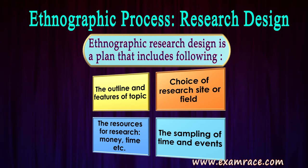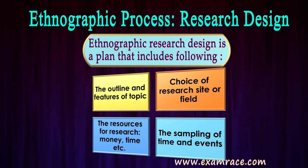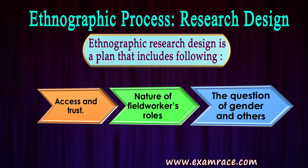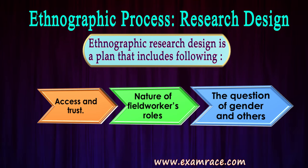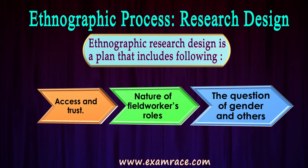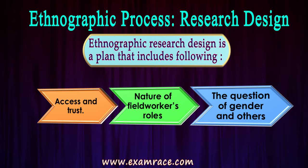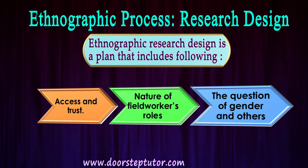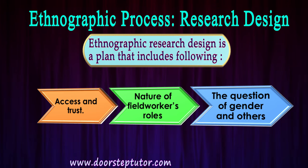The fourth step is the sampling of time and events to be experienced in the field. The fifth step is access and trust — this is about gaining access to the society and maintaining the trust of the people where the researcher is doing fieldwork. The sixth step is the nature of the field worker's roles when interacting with informants, which should be polite, non-interfering, and unbiased.